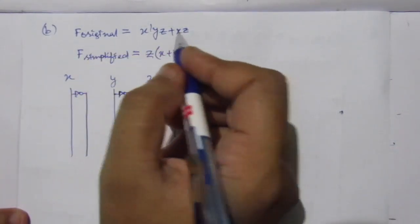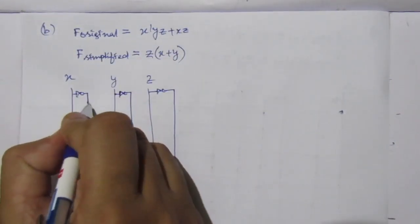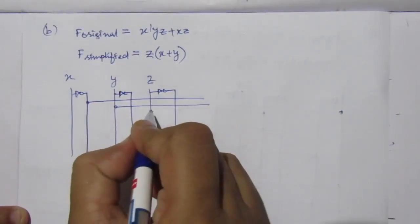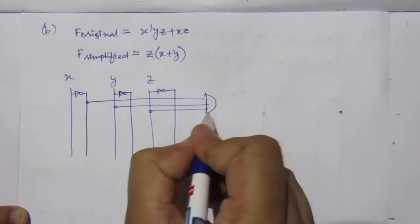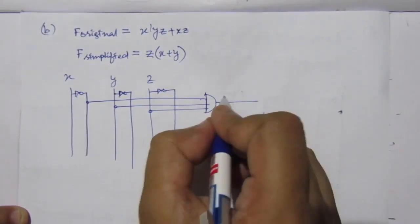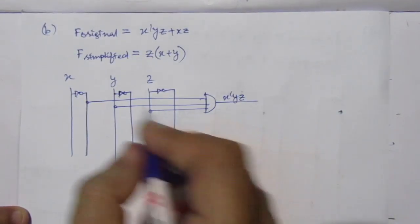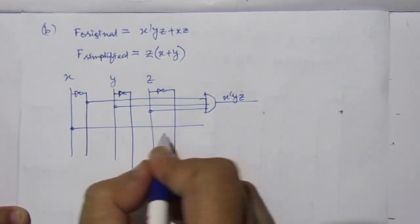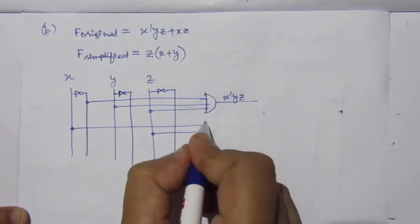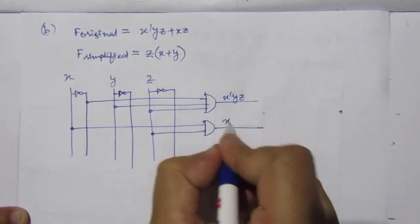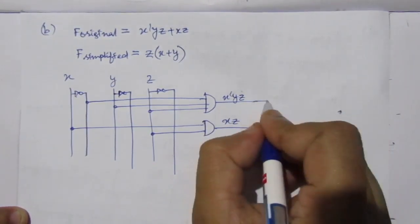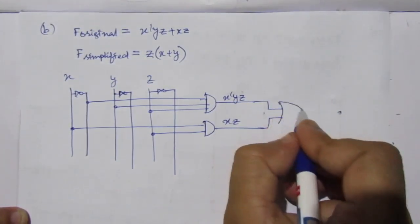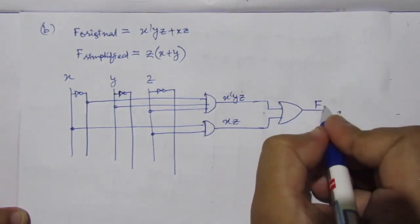The first term of the original expression is X̅YZ. Take X̅, Y and Z lines and use an AND gate to get X̅YZ. The next term is XZ — take lines from X and Z and use an AND gate. Then use an OR gate to combine both terms, giving F original.